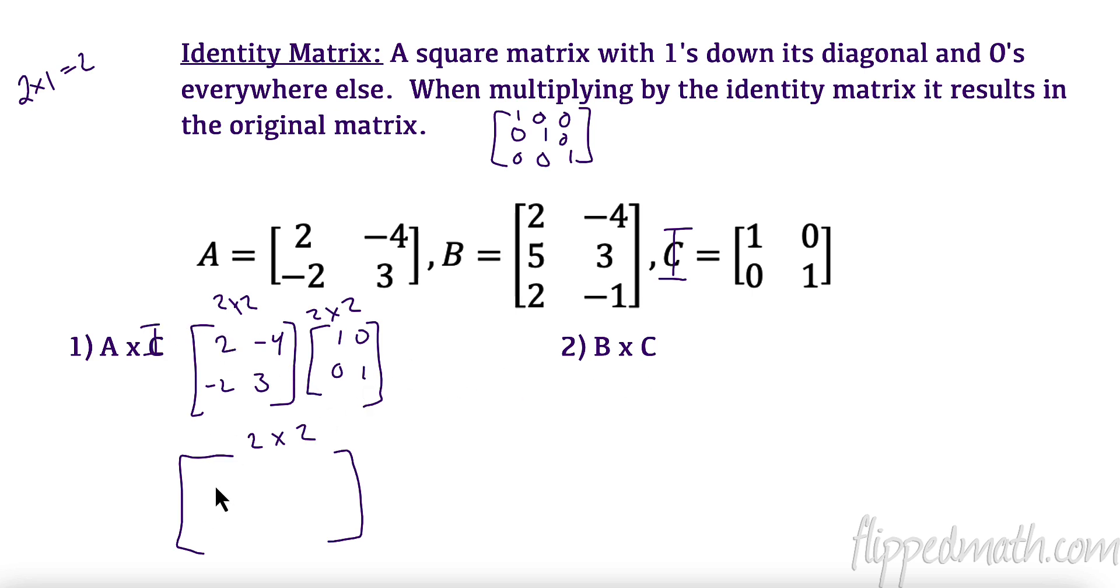First element is first row, first column. So, first row times the first column. 2 times 1 is 2. Negative 4 times 0 is 0. So, this is going to be 2. This is the first row, second column. 2 times 0 is 0. Negative 4 times 1 is negative 4. Add them together, I get negative 4. Second row, first column: negative 2 times 1 is negative 2. 3 times 0 is 0. So, negative 2. Over here, second row, second column: negative 2 times 0 is 0 and 3. So, we got the exact same thing back.